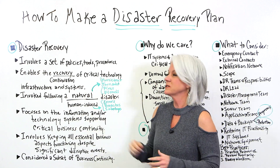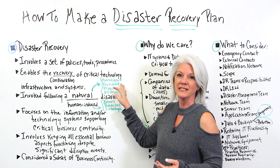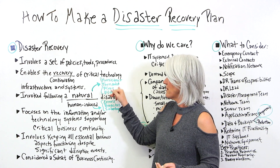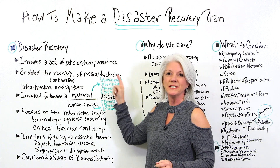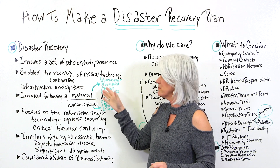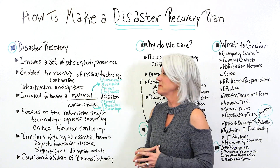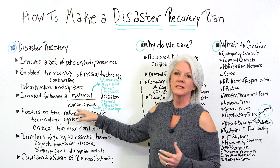Some natural disaster examples are hurricanes, tornadoes, fires, and floods. Different areas of the world are hit by these on a periodic basis.